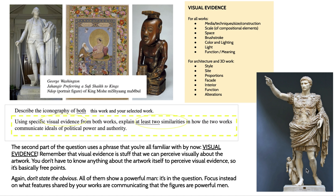The next part of the question asks about visual evidence — this term should be a buzzword in your brain by now. Visual evidence is stuff that you can perceive visually about an artwork; you don't need to know anything about the artwork whatsoever. All you need is working vision. Don't state the obvious — all of them show a powerful man; that's already in the question. Focus instead on what features shared by your artworks are communicating that the figures are powerful men. How do we know that they're powerful?